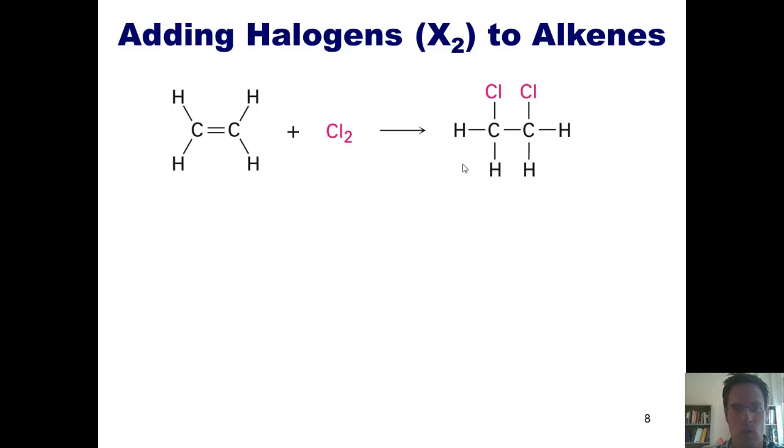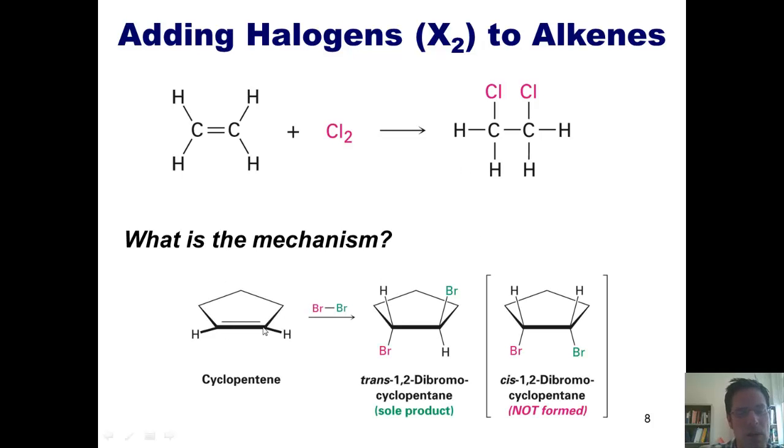How in the world does this proceed and what is the mechanism? Well, the mechanism for this one is kind of interesting. Let me show you why. It's been observed by conducting actual experiments with this reaction, that if you take this molecule, cyclopentene, and react it with Br₂, you end up getting the bromines always facing in opposite directions.